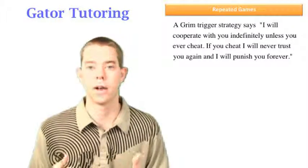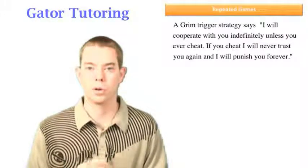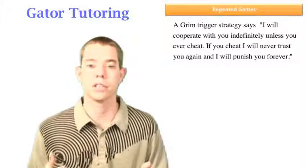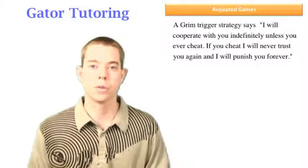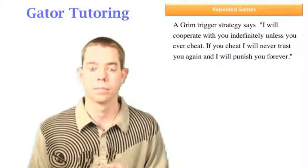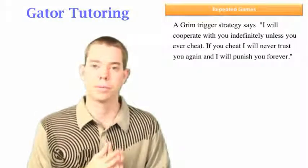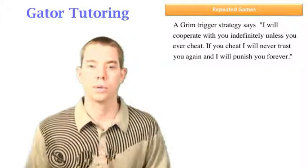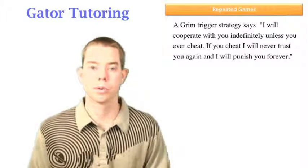This is different than a tit for tat strategy. So just remember that we don't need that in this question. But a tit for tat strategy says, I'll do this period what you did last period. Again, I'll do right now what you did last period. That's tit for tat. And we're dealing with a Grim Trigger strategy. So just know the difference between those two.